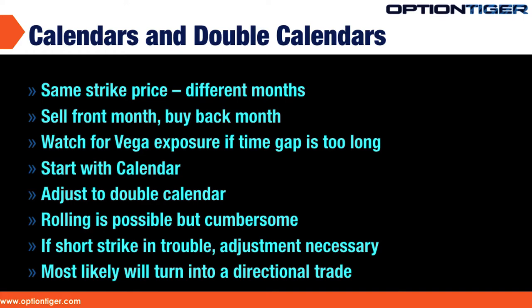Let's say we're looking at the June series and the July series. You're going to sell the front month at-the-money strike price — it can be a call or a put, it doesn't matter. You're going to sell the at-the-money front month option and buy the back month, which would be July, at the same strike price. It has to be the same strike price, and usually it's going to be at the money.